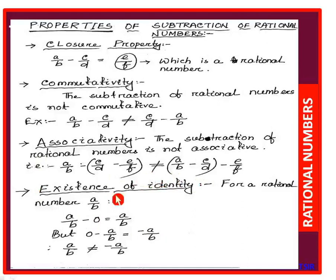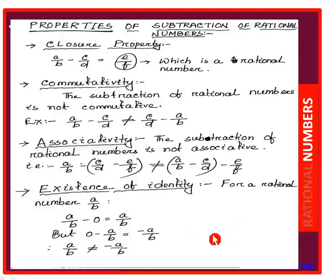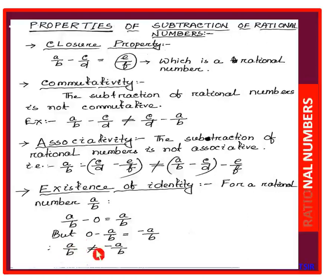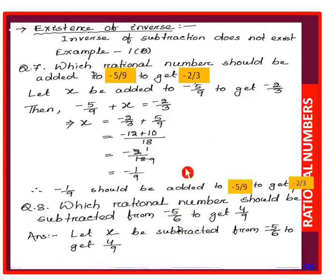Existence of identity: for a rational number A/B, A/B minus 0 equals A/B, but 0 minus A/B equals -A/B. So A/B is not equal to -A/B, meaning 0 is not an identity for subtraction. Also, inverse of subtraction does not exist.